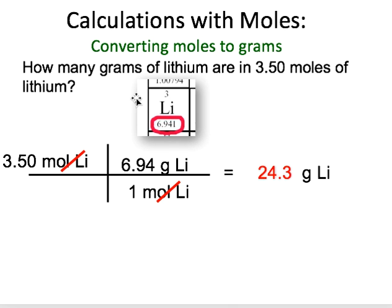Example one: how many grams of lithium are in 3.5 moles of lithium? This works like any other dimensional analysis problem. We start with 3.50 moles of lithium and end with grams of lithium. We use the molar mass: one mole of lithium is 6.94 grams. Arrange the conversion factor to cancel moles, and 3.5 times 6.94 gives us 24.3 grams — to three significant digits.